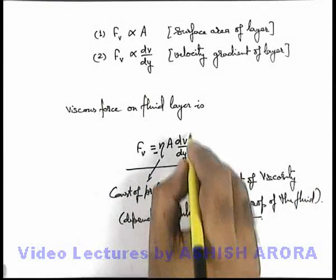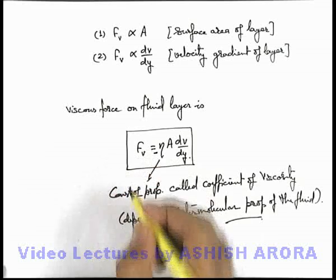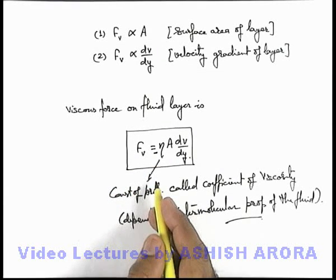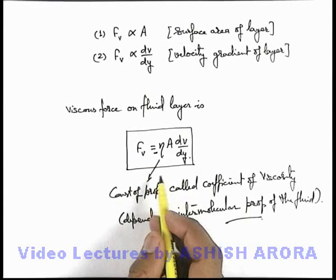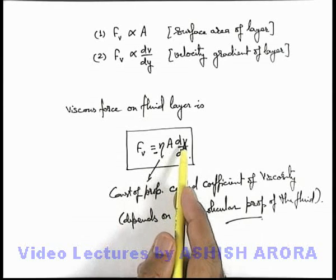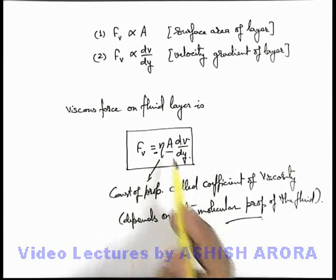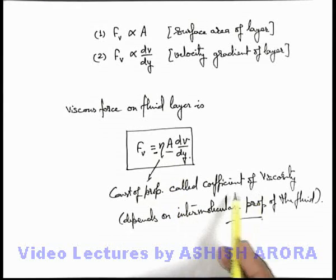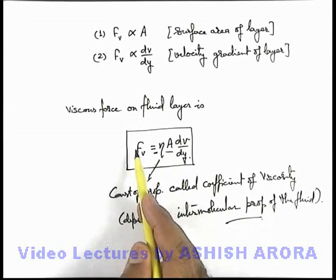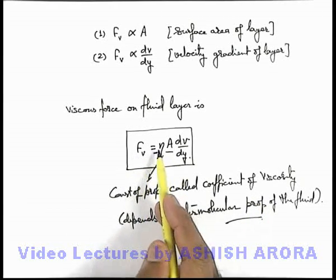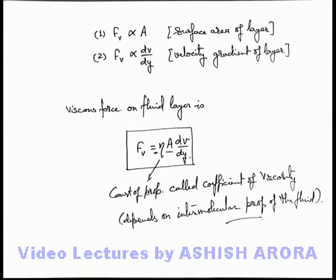So just keep it in mind that this is the expression for the viscous force acting on a fluid layer in which fluid is flowing, which is having a velocity gradient dv over dy and the surface area A, and if the fluid has a coefficient of viscosity eta, then its magnitude is eta A dv over dy. We'll soon see different applications related to this.